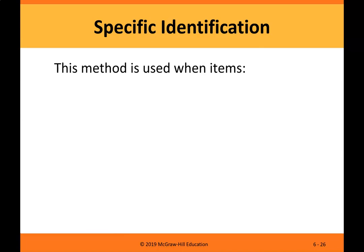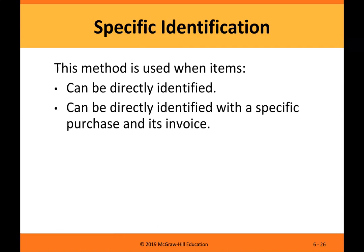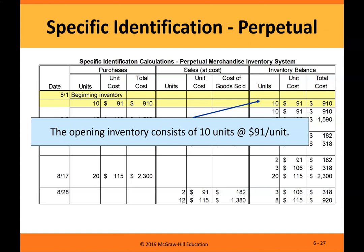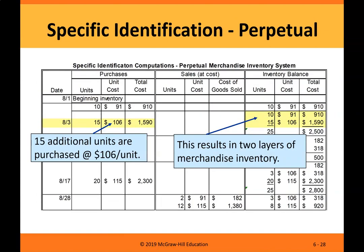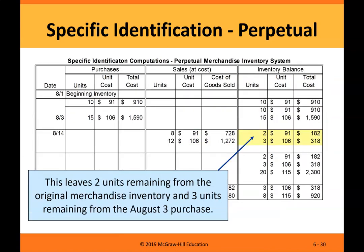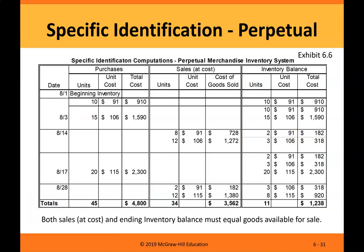Specific identification. This method is used when items can be directly identified with a specific purchase and its invoice — for example, automobiles, art, custom furniture, and custom jewelry. The opening inventory consists of 10 units at $91 per unit, and 15 additional units are purchased at $106 per unit, resulting in two layers of merchandise inventory. On August 14th, 20 units are sold: 8 from opening inventory and 12 from the August 3rd purchase. This leaves 2 units from the original inventory and 3 units from the August 3rd purchase. Both sales at cost and ending inventory balance must equal goods available for sale.